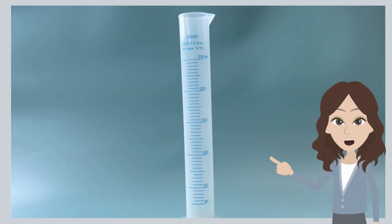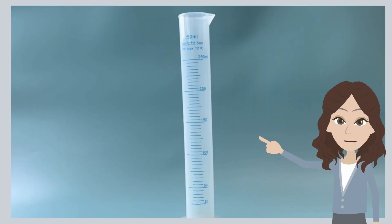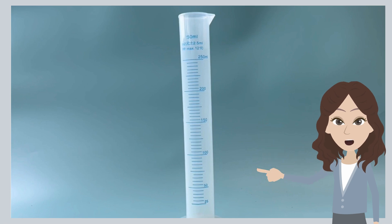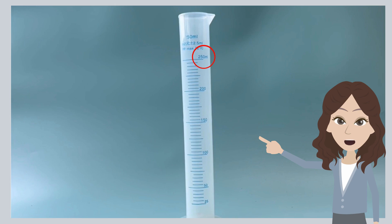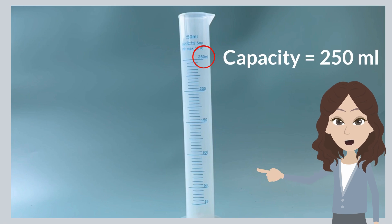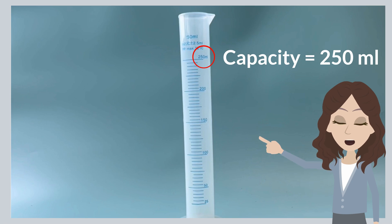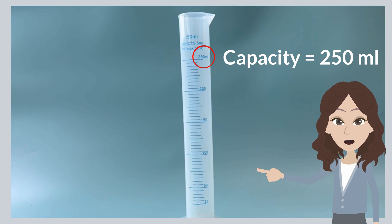Now, let's look at another measuring cylinder. What is different about this measuring cylinder? It has a capacity of 250 milliliters. This means that it can measure greater volumes of water up to 250 milliliters.